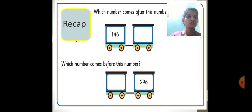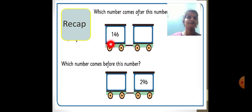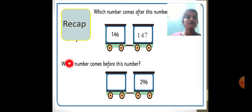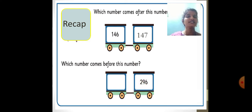Before going to see our new topic, let us recall the previous topic. Previous topic we had seen before and after numbers. Which number comes after 146? The number after 146 is 147. Which number comes before 296? The number before 296 is 295.